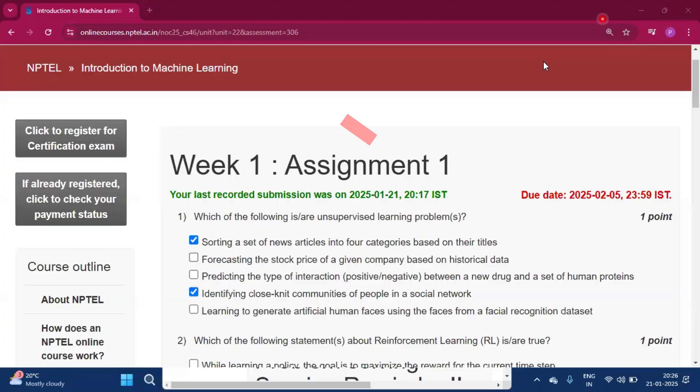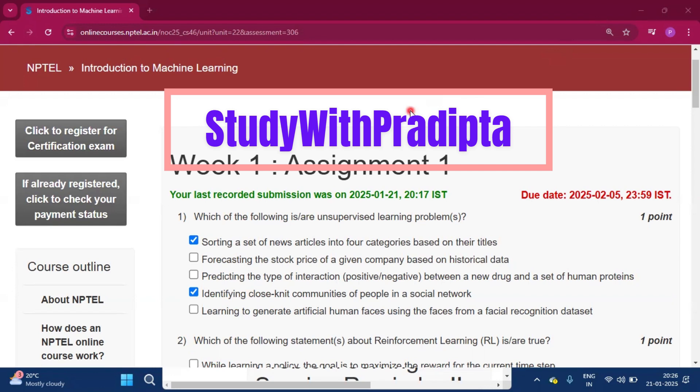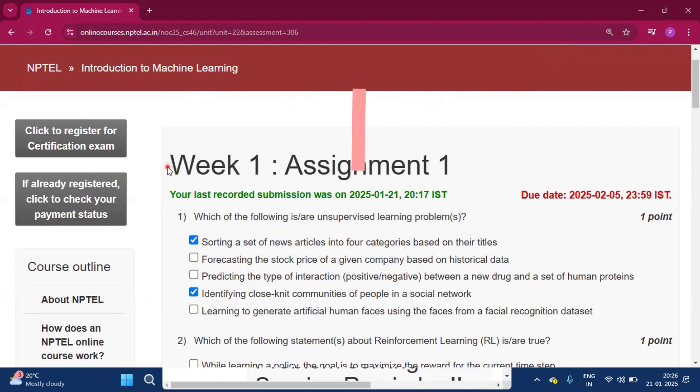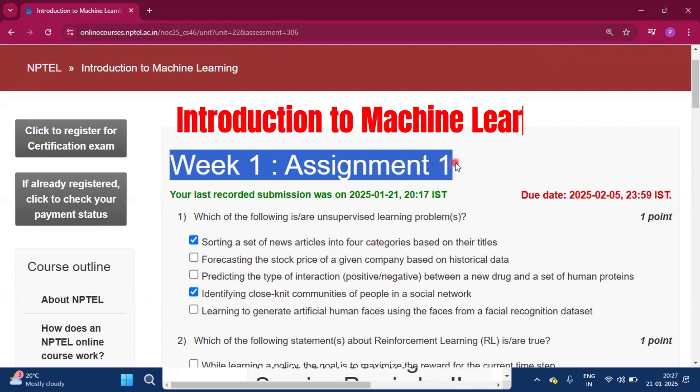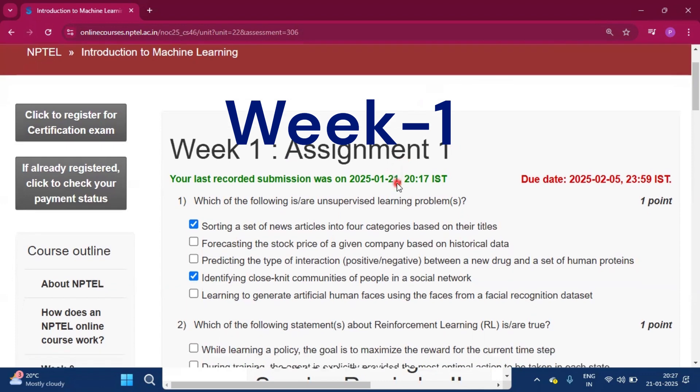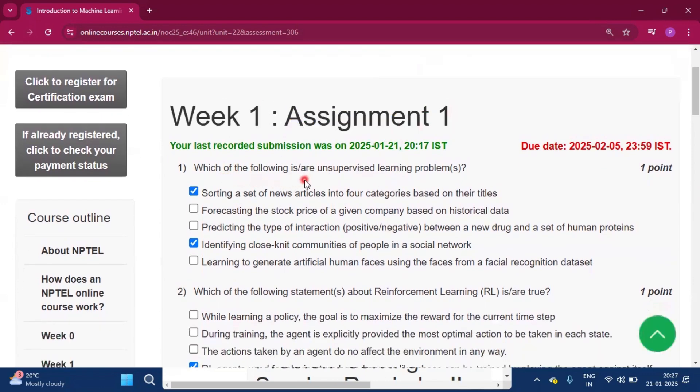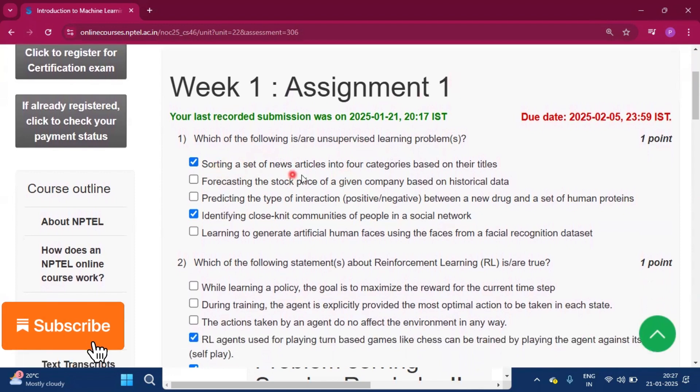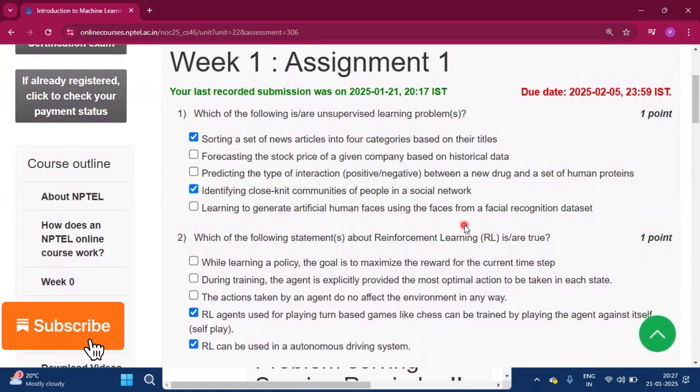Hello and welcome to my channel Study with Proditto. Today I will solve the assignment answers of the course Introduction to Machine Learning. I will solve Quiz 1, Assignment 1. Which of the following is or are unsupervised learning problems? Sorting a set of news and identifying close-knit communities of people in a social network.